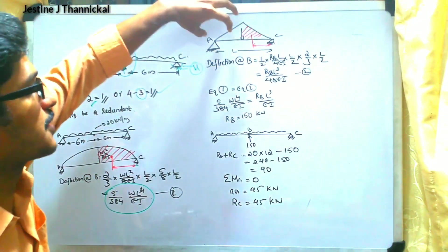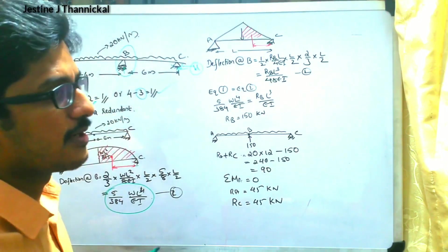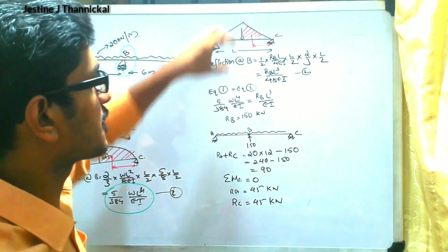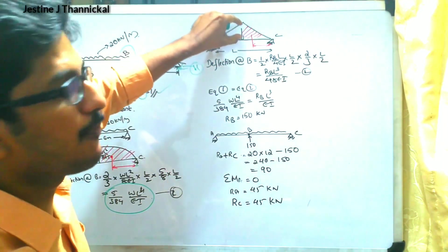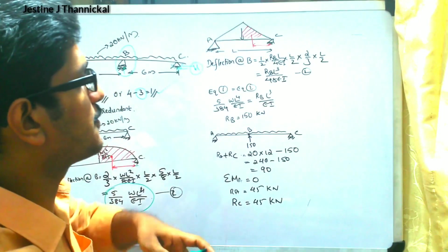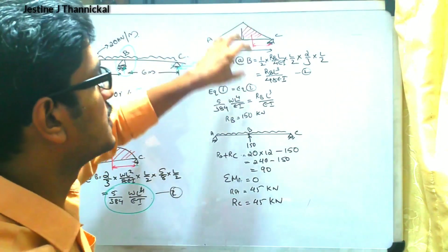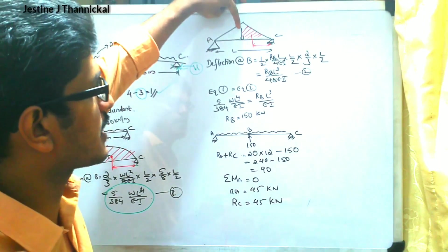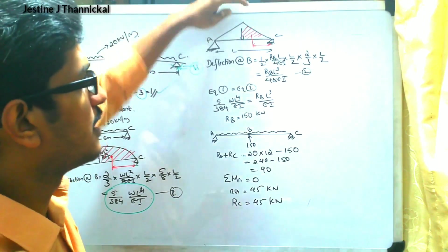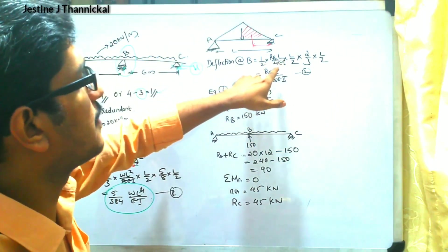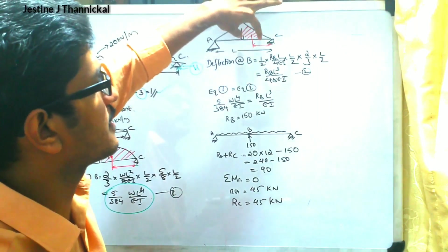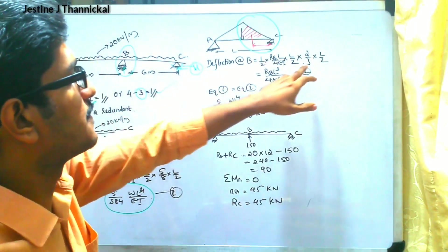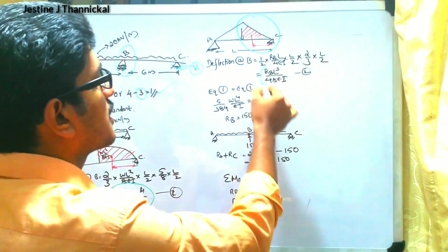For the second case, we determine the deflection if a point load acts on a simply supported beam. The maximum bending moment for a simply supported beam with a point load at center is WL/4. The redundant is Rb, written in the downward direction for convenience. We write (Rb L/4EI) × (L/2) × (2/3) for the area, then multiply by the center of gravity distance 2/3 × (L/2), finally giving Rb L³ / (48EI).